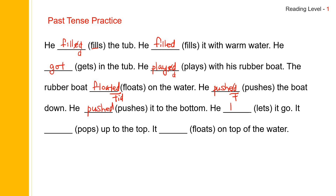Let — past tense is let. Let. And pop — it's regular: pop plus E-D with an extra P — popped. Popped. Floated. F-L-O-A-T-E-D.